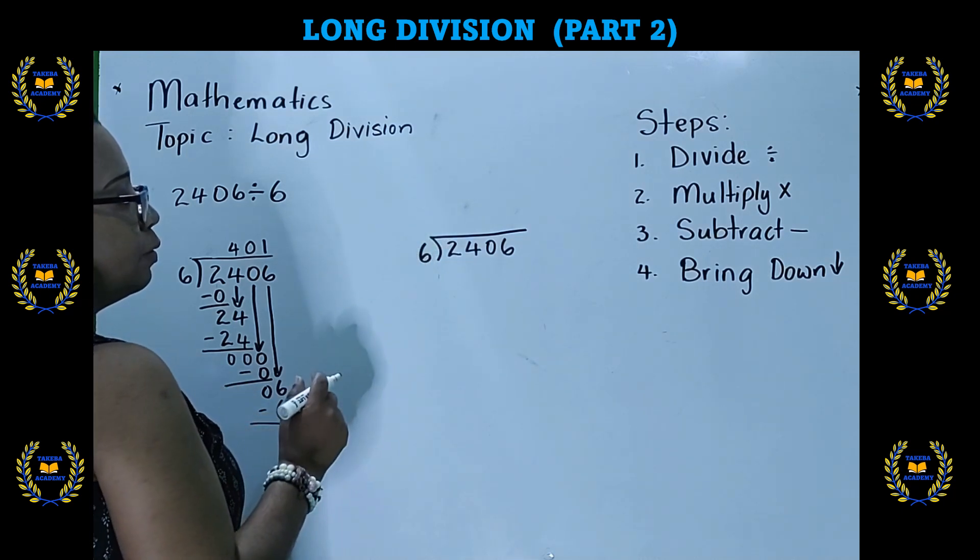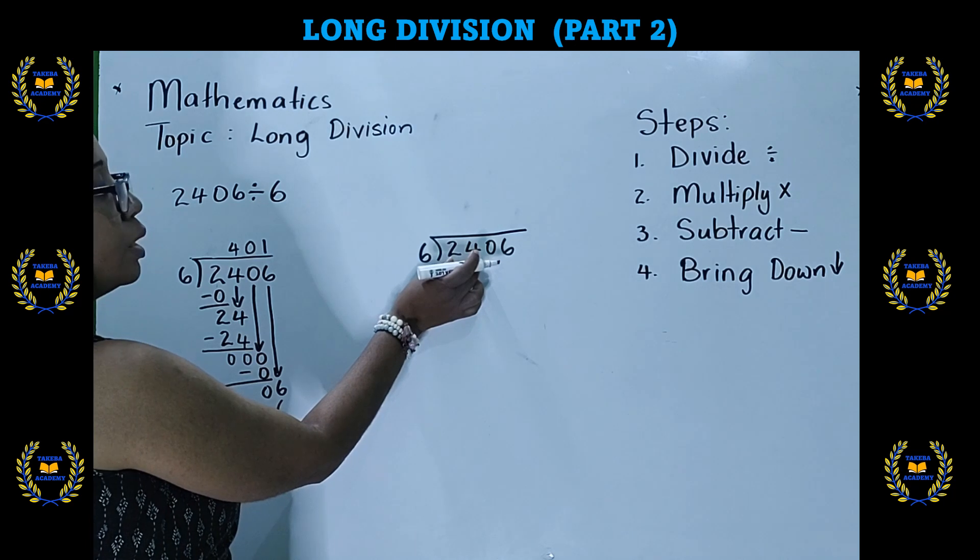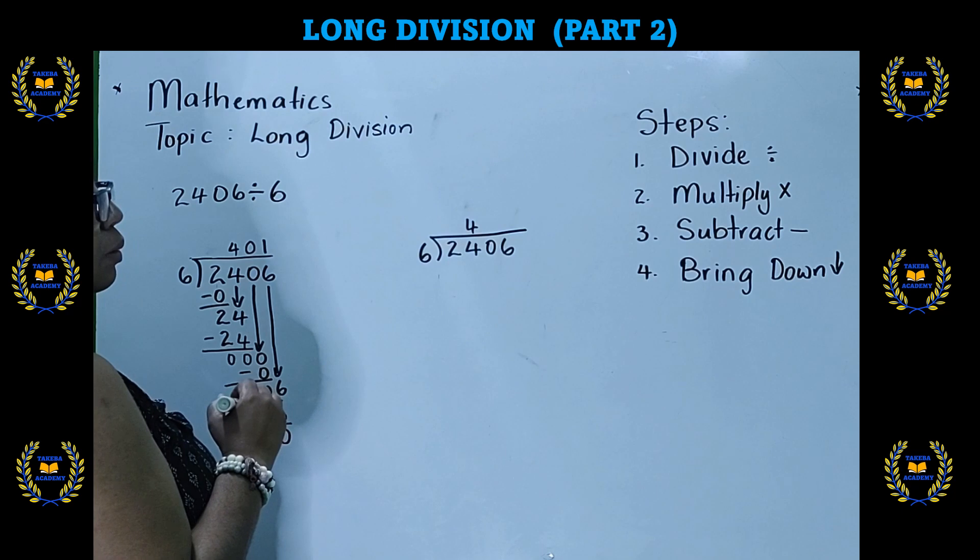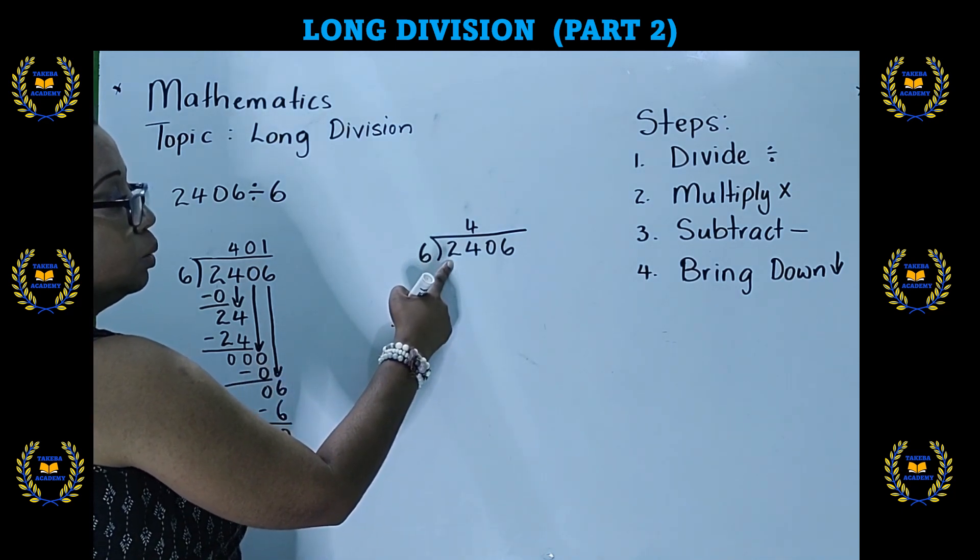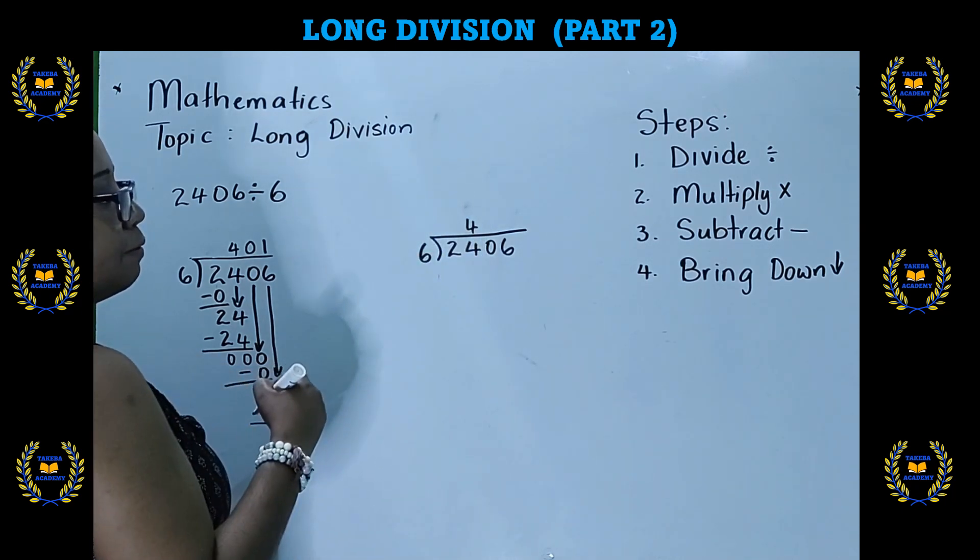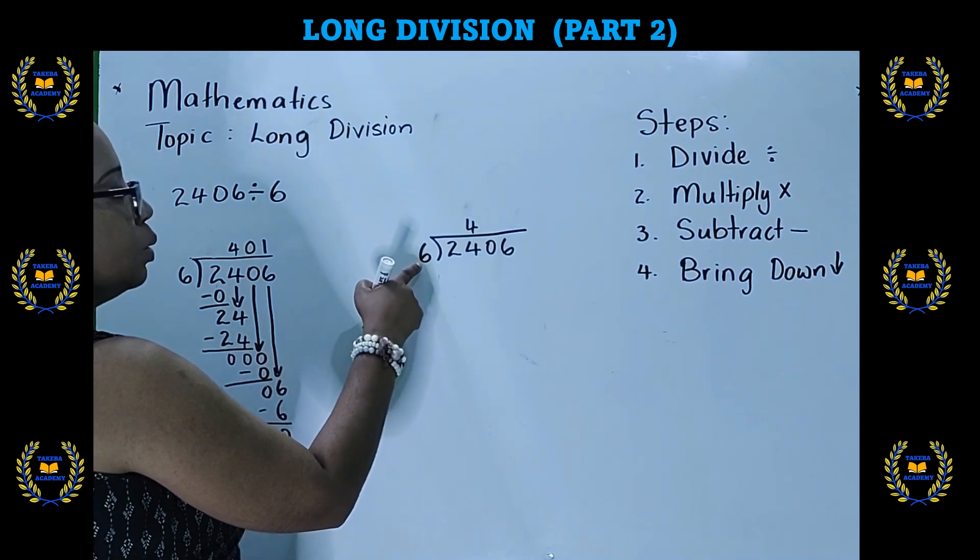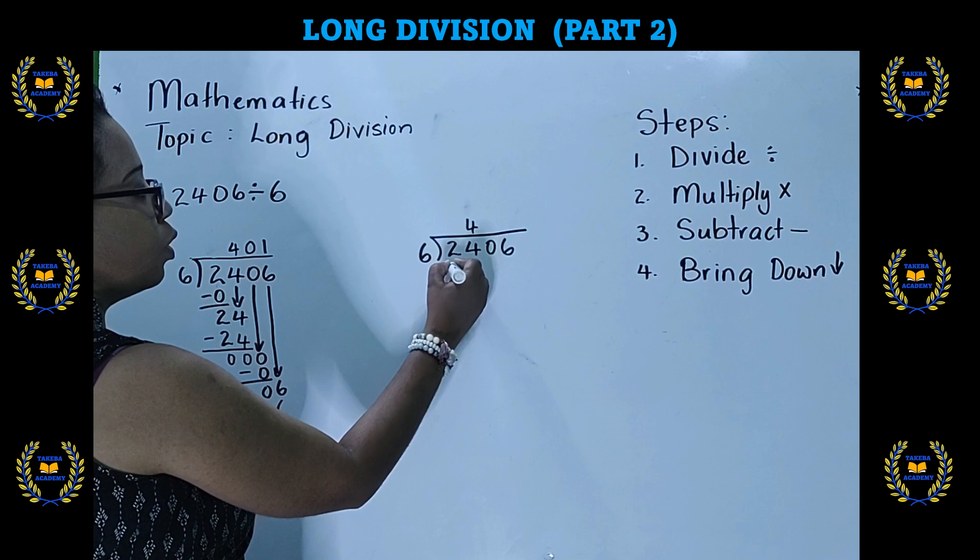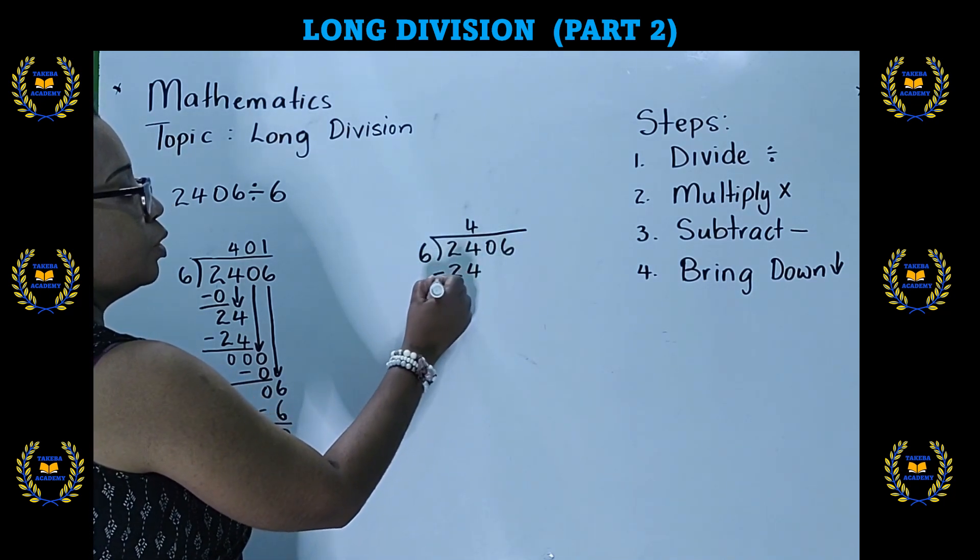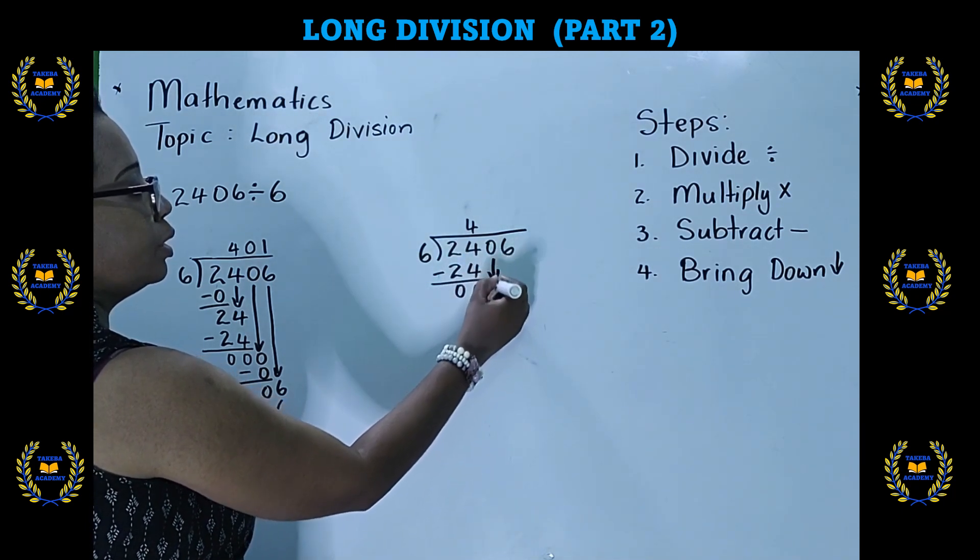So when we divide 24 by 6, meaning how many groups of 6 can we get out of 24, the answer is 4. Now, we do not place the 4 above the first number. We place it above the second number because these two numbers are working together. So you place the answer above the second number. We couldn't divide by 2 alone, so we divide it by 24. So our answer goes above the final number in the two numbers that we were trying to divide. Then we multiply. That's the second step. 6 times 4 is 24. Third step, we subtract. We are left with 0s.